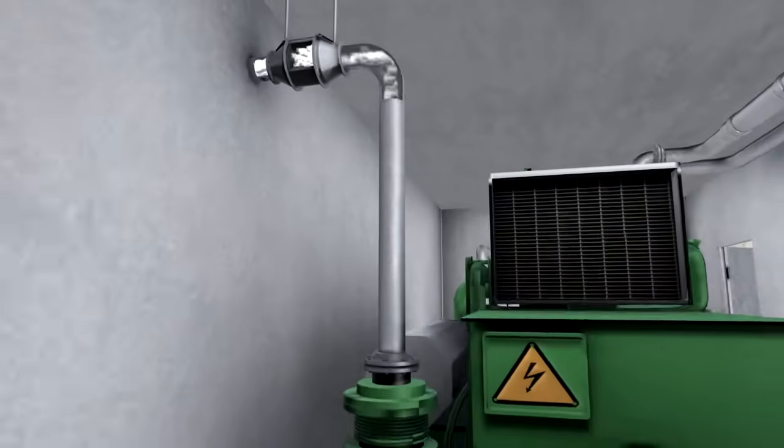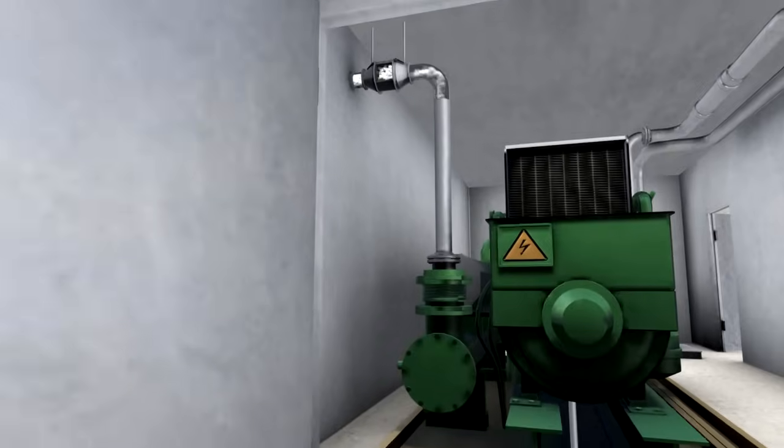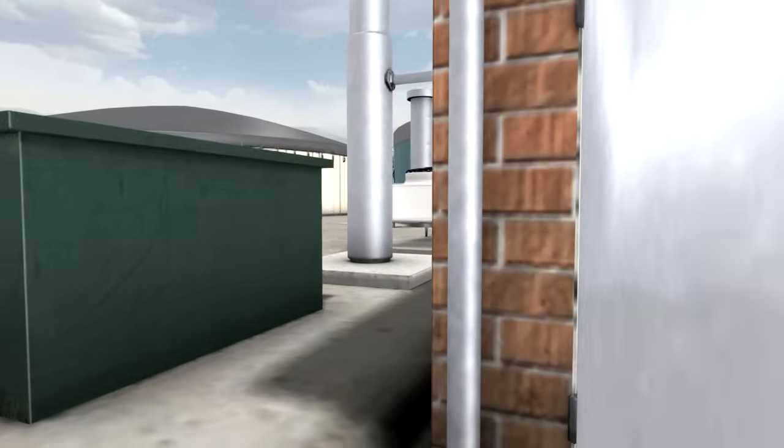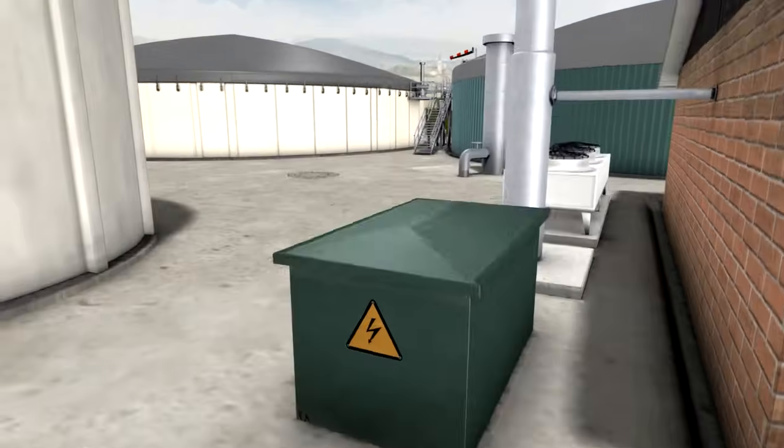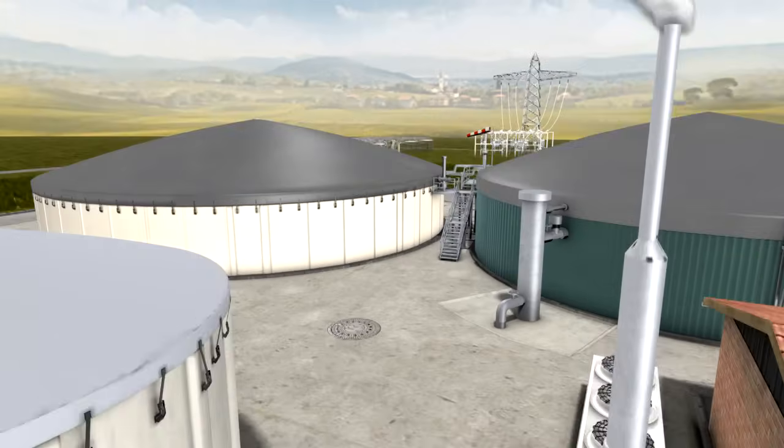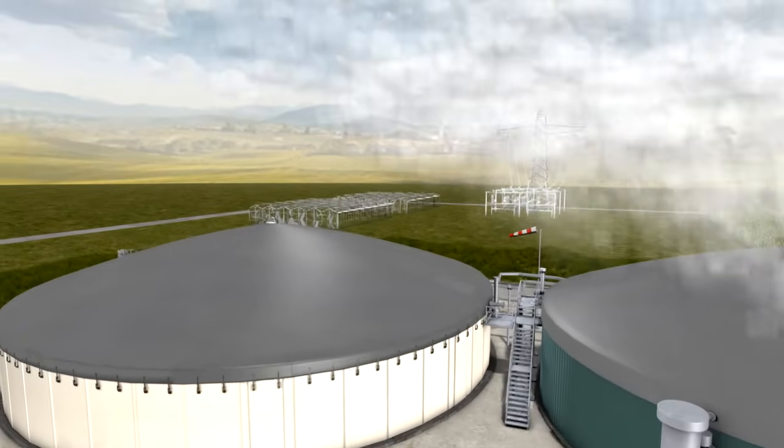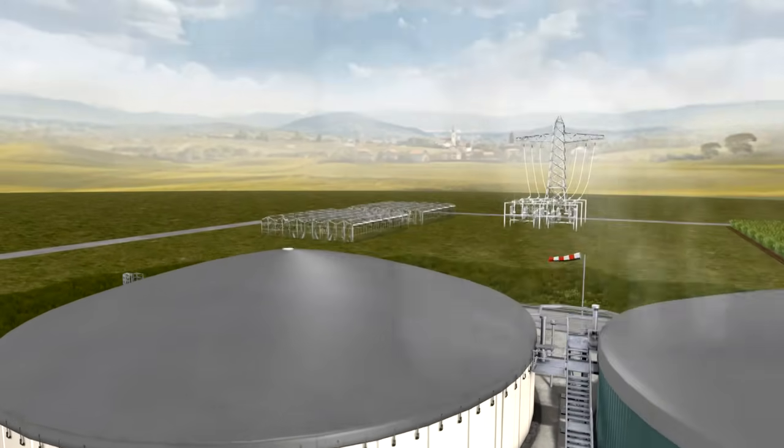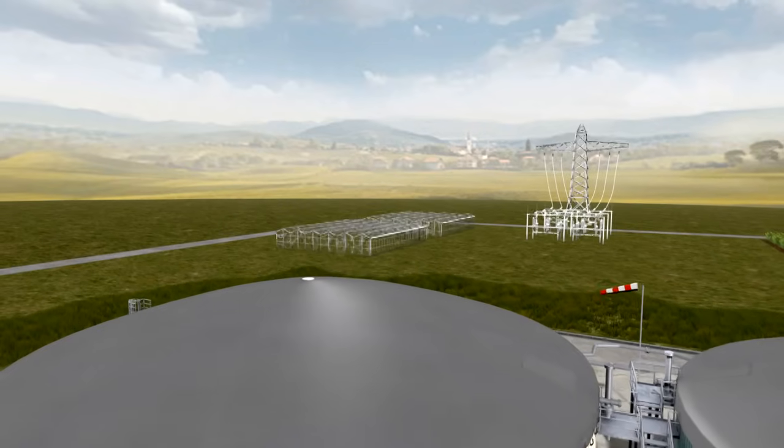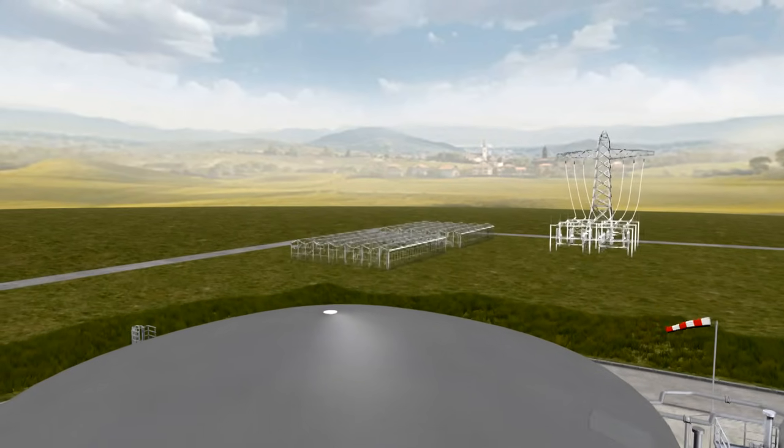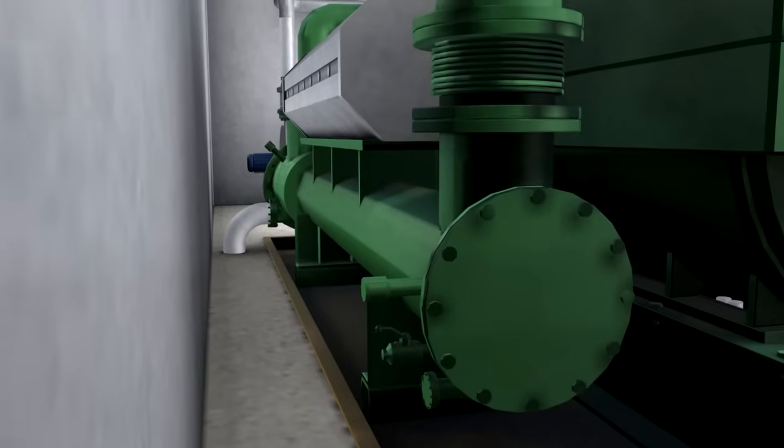The generated electricity is fed to a transformer at mains voltage and then supplied to the public network on site. The thermal energy can be used for heating buildings and stables, greenhouses or for the heat supply of the entire residential area, depending on requirements and the size of the plant. Part of the heat is then fed back into the process for heating the fermenter.